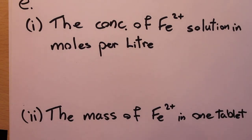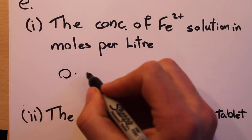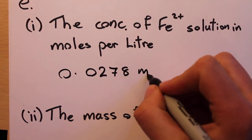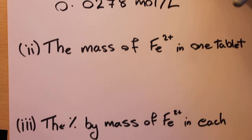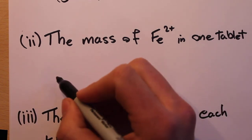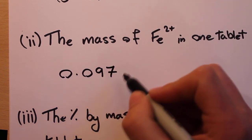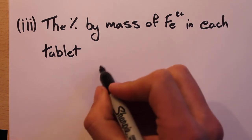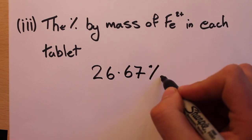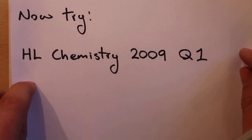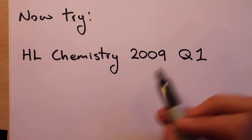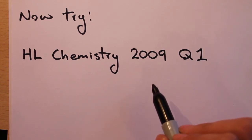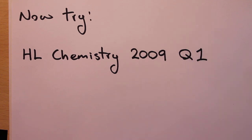So what we've done: we found the concentration of Fe²⁺ solution — 0.0278 moles per liter; the mass of Fe²⁺ in one tablet — 0.097 grams; and the percentage by mass of Fe²⁺ in each tablet — 26.67%. That finishes this question. You should now try Higher Level Chemistry Question 1 from the 2009 paper, which is a very similar question and will give you an opportunity to practice what we've just learned.